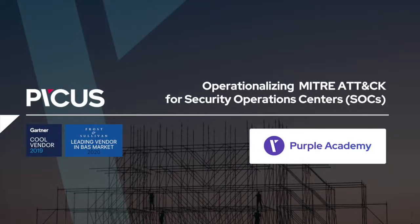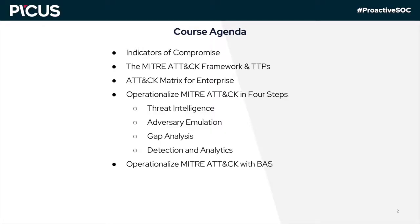Welcome to the Operationalizing MITRE ATT&CK for Security Operations Centers course by Purple Academy. This is the fifth course of the Proactive Security Operations Center Learning Path. By the end of this course, you will have learned about Indicators of Compromise, the MITRE ATT&CK Framework and TTPs, and the ATT&CK Matrix for Enterprise. Then you will learn the four steps of Operationalizing MITRE ATT&CK: Threat Intelligence, Adversary Emulation, Gap Analysis, and Detection and Analytics.